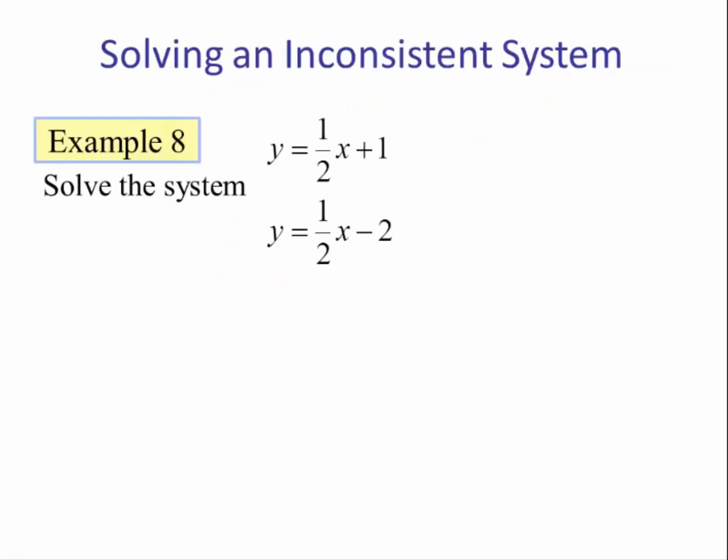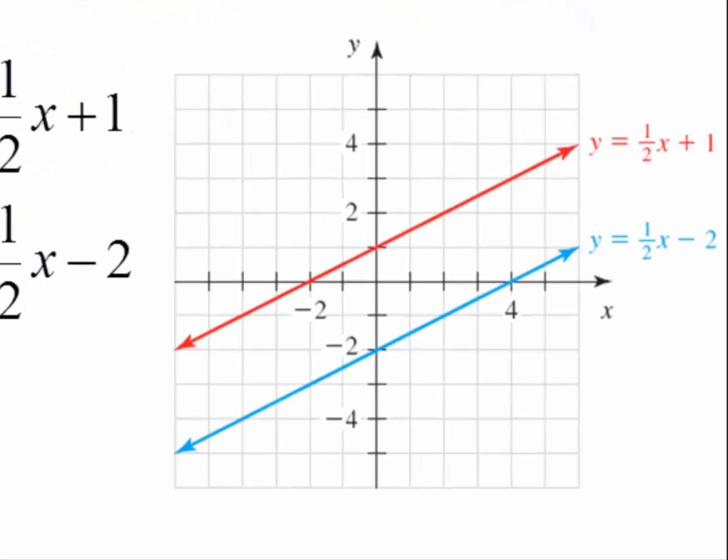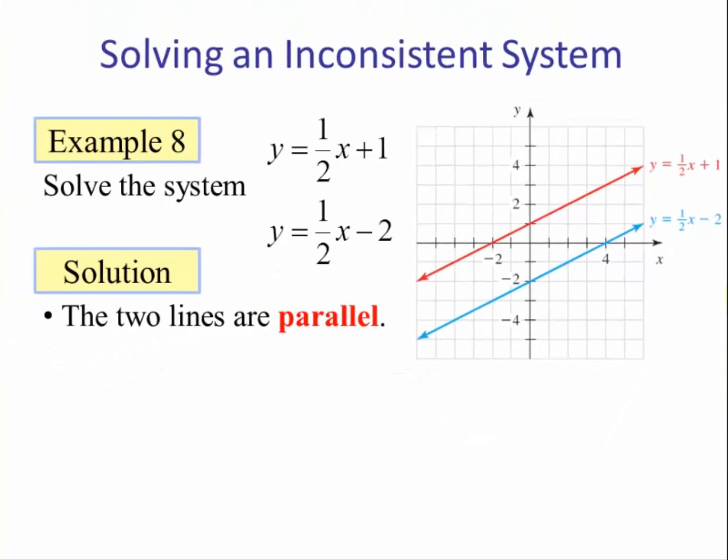Let's do an example. Example 8: Solve the system y equals one half x plus one, y equals one half x minus two. Solution: When we graph these two equations, we see that these are what we call parallel lines, and that's lines that do not intersect. So we say the solution is the empty set because there is not an ordered pair that is on both graphs.